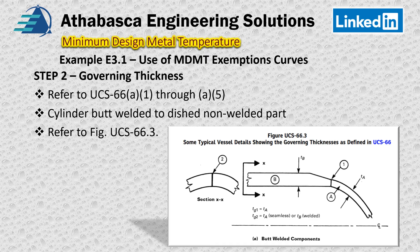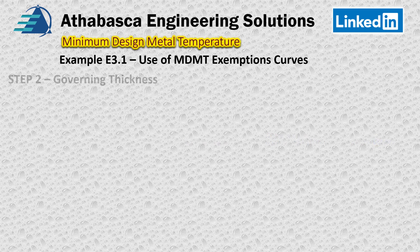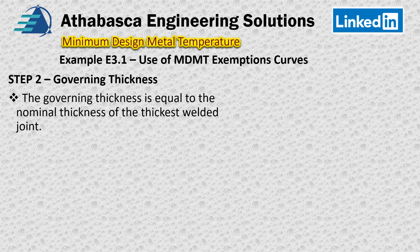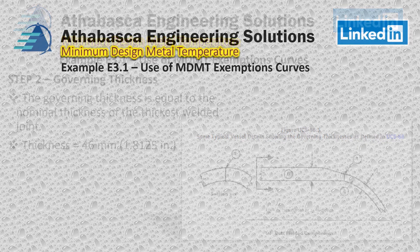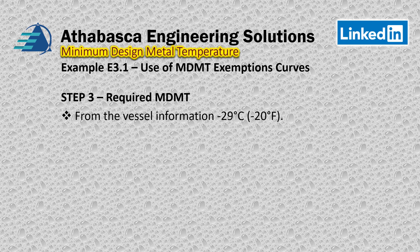This is the figure shown here. Step 2 — Governing thickness: the governing thickness is equal to the nominal thickness of the thickest welded joint. Therefore the thickness is determined to be 46 millimeters. We go back to the curve again, and from the vessel information, we require — this is what they call the arbitrary MDMT — we need to hit minus 29°C, or minus 20°F.